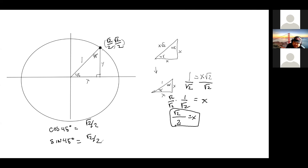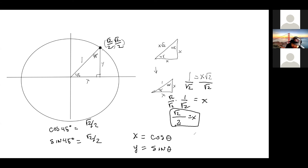The conclusion — and what we're supposed to discover in the assignment — is that every x value equals the cosine of the given angle, every y value equals the sine of the given angle, and tangent is opposite over adjacent. What's the tangent of 45? It's one.